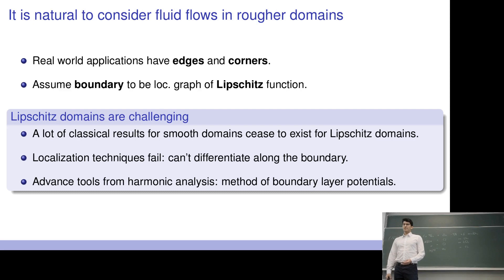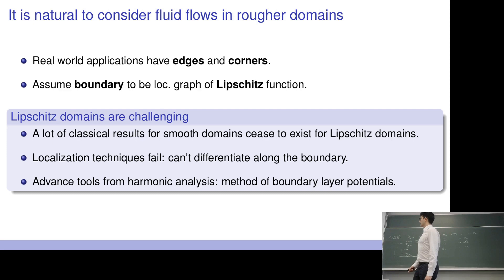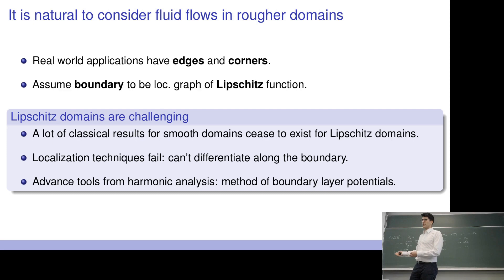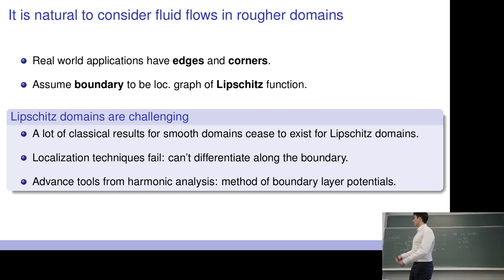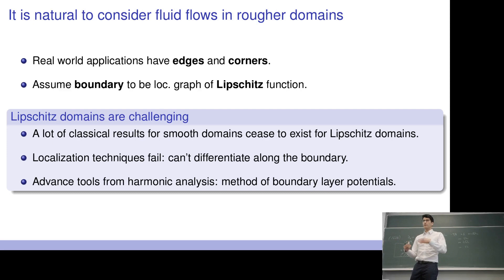Lipschitz domains are challenging for at least three reasons. Many classical results for Navier-Stokes and other PDE problems usually assume more smoothness on the boundary; if one reduces to a rough domain like a Lipschitz domain, these results — existence of solution, regularity of solution — cease to exist. This is still an open field of research. One reason is that localization techniques fail: if you try to localize at one point, the maps used for localization are not smooth enough to differentiate through them.